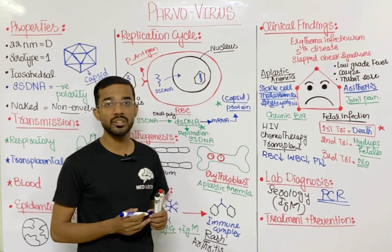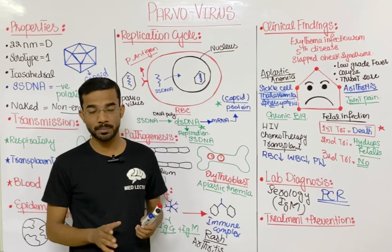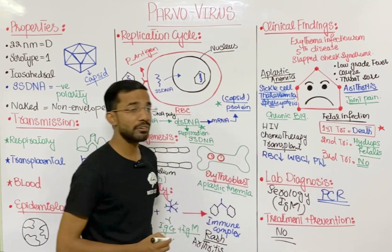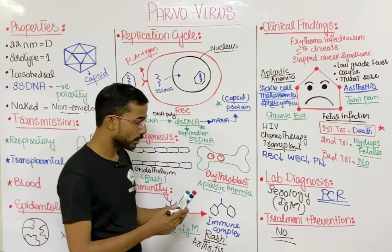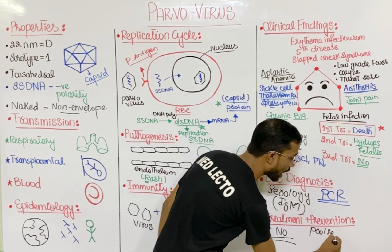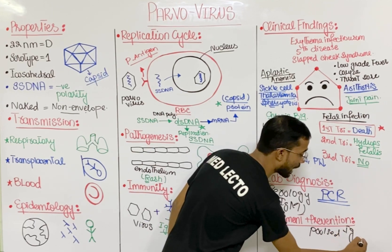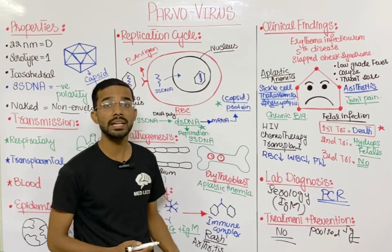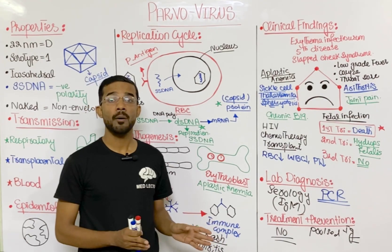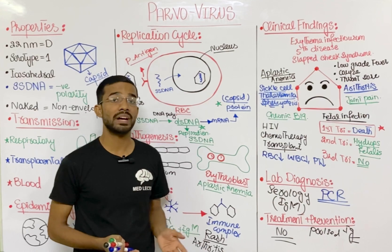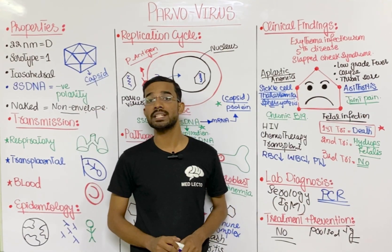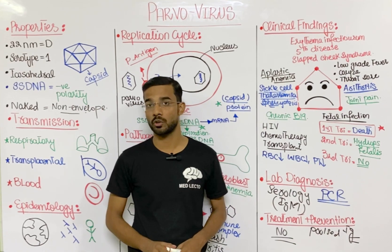Regarding treatment, there is no specific treatment for parvovirus. For prevention, pooled immunoglobulins can be used in immunocompromised patients. There is no chemoprophylaxis and no vaccine available for parvovirus. This concludes the lecture on parvovirus. If you have any questions, ask in the comment section. Thank you.